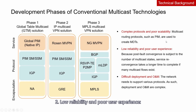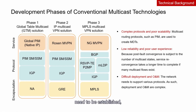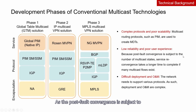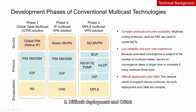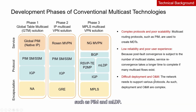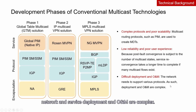Second, low reliability and poor user experience: more multicast flows on a network means more MDTs need to be established, leading to higher network overheads. As post-fault convergence is subject to the number of multicast states, the time required for service recovery is prolonged. Third, difficult deployment and operation and maintenance: the network needs to support various protocols such as PIM and MLDP, making network and service deployment and operation and maintenance complex.